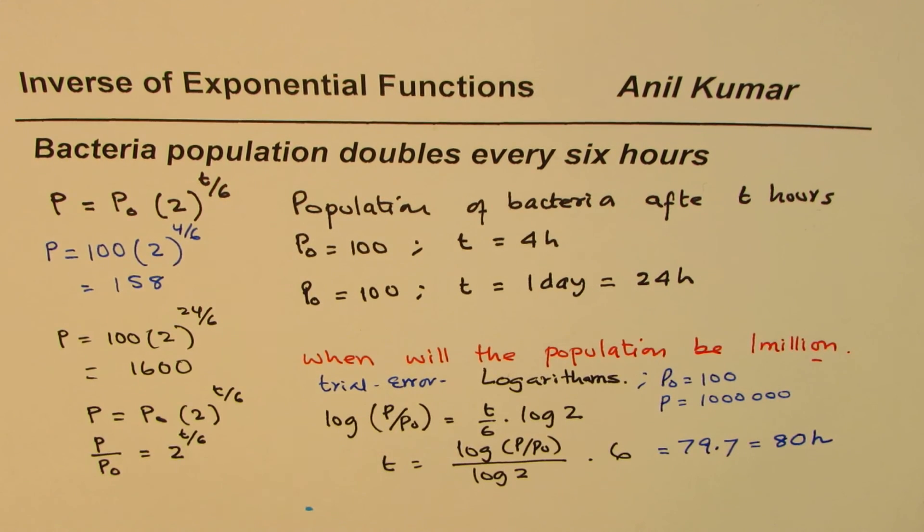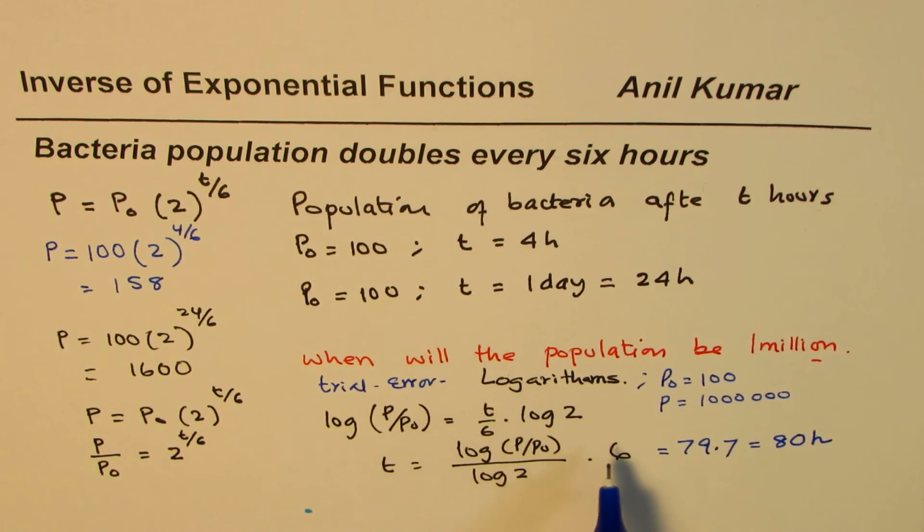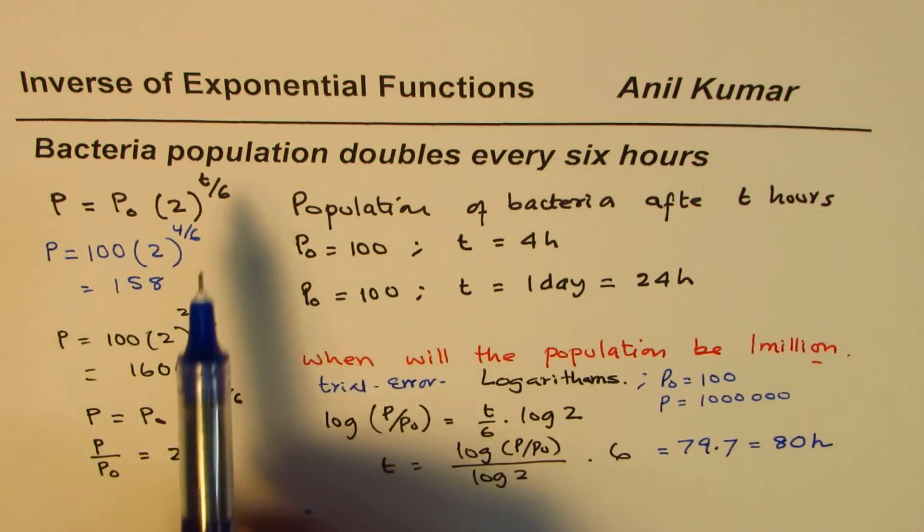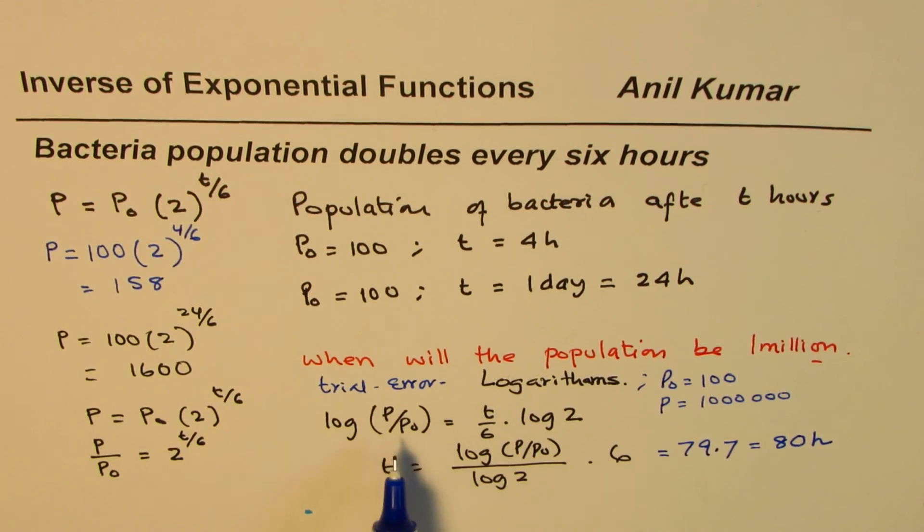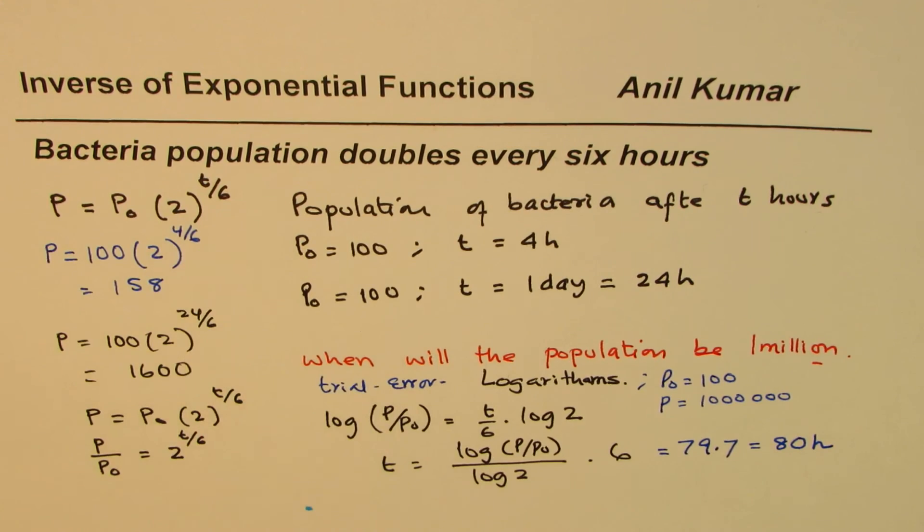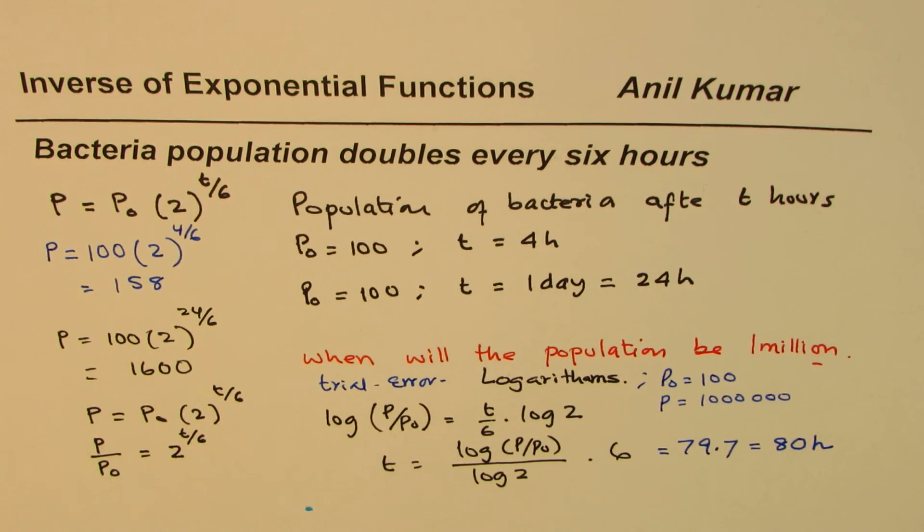So that is how you could always do it, but it takes 80 hours for this variety of bacteria to grow from 100 to 1 million which has doubling time of 6 hours. What we saw here is that logarithms are inverse of exponential functions which can be used to solve such exponential equations. I'm Anil Kumar and I hope that helps, thank you and all the best.